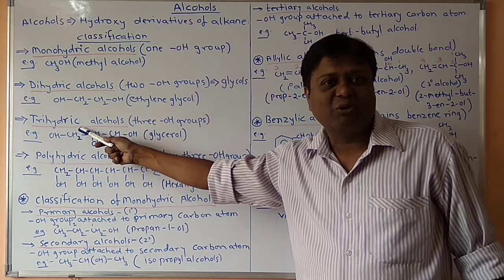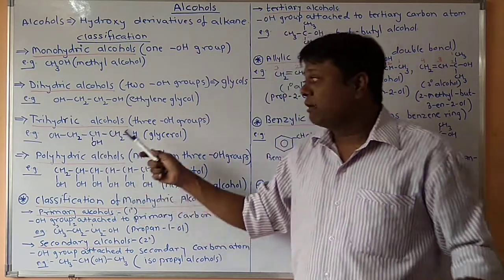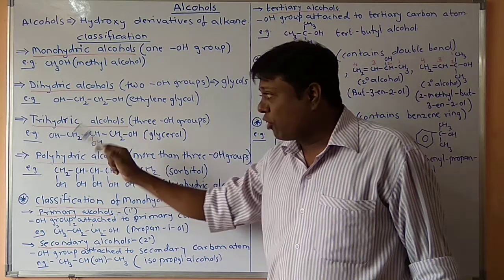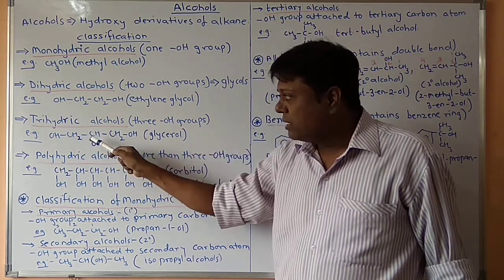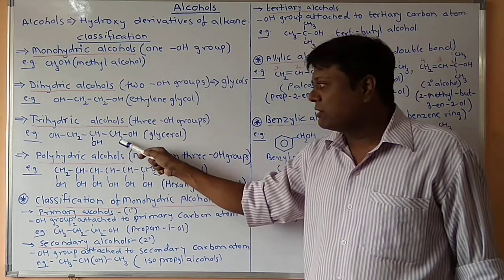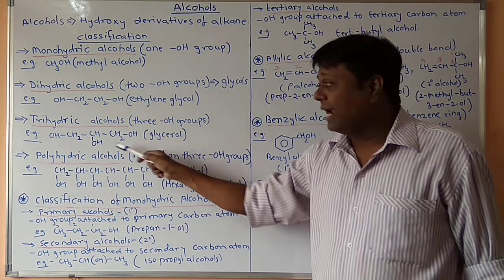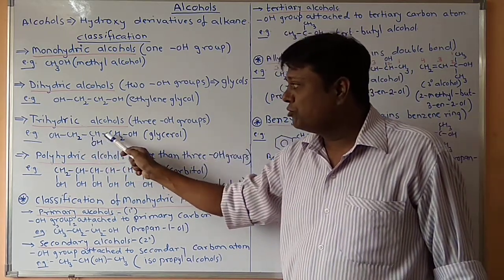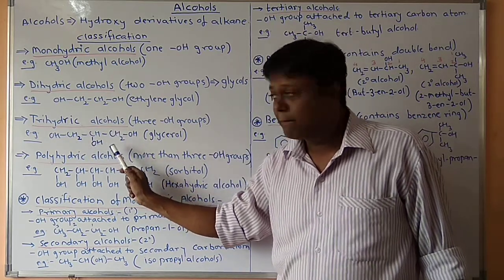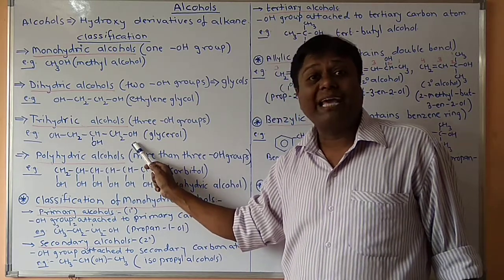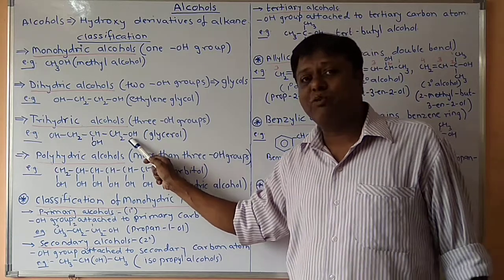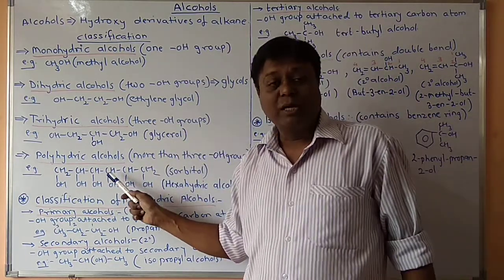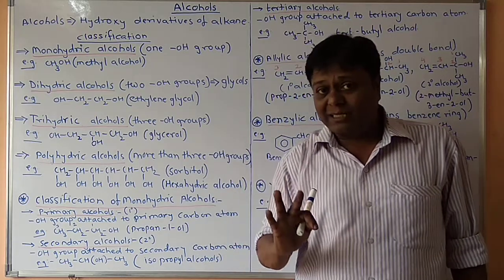Third: trihydric alcohols, where three hydroxy groups are attached. If we consider propane CH3-CH2-CH3, one hydrogen atom is replaced by a hydroxy group, the second hydrogen atom by a second hydroxy group, and the third hydrogen atom by a third hydroxy group. The example is glycerol, or in IUPAC nomenclature propane-1,2,3-triol, because three hydroxy groups are attached.